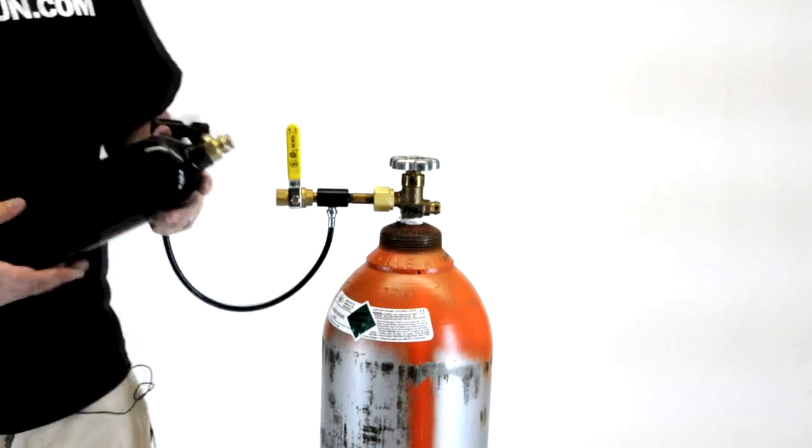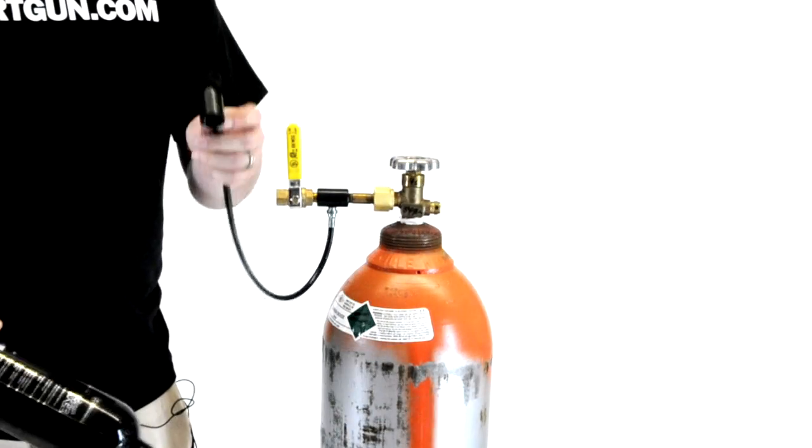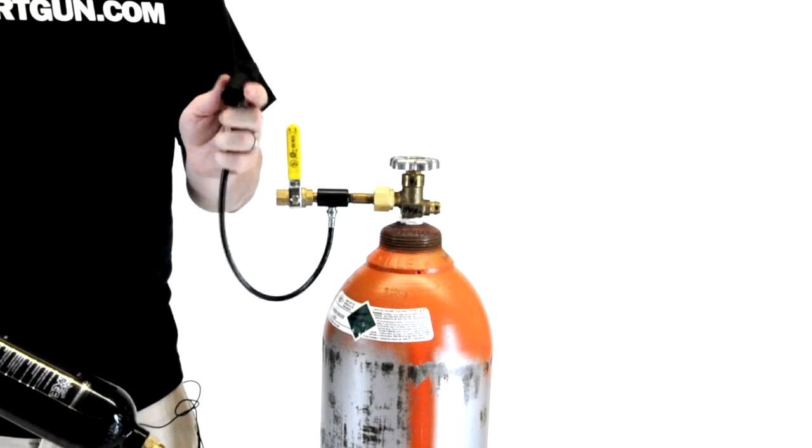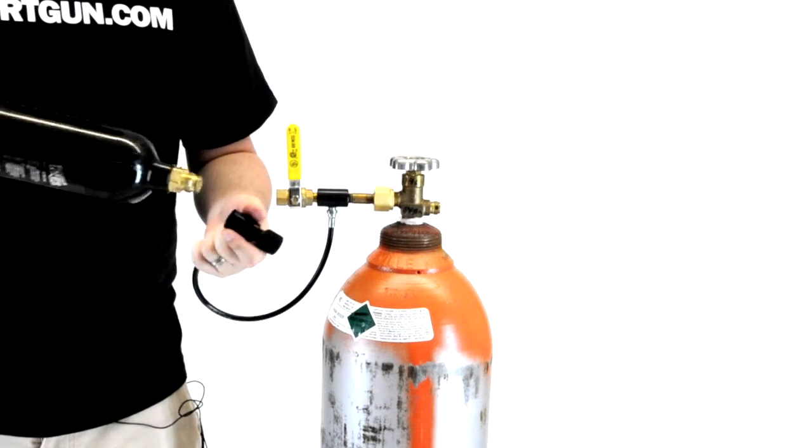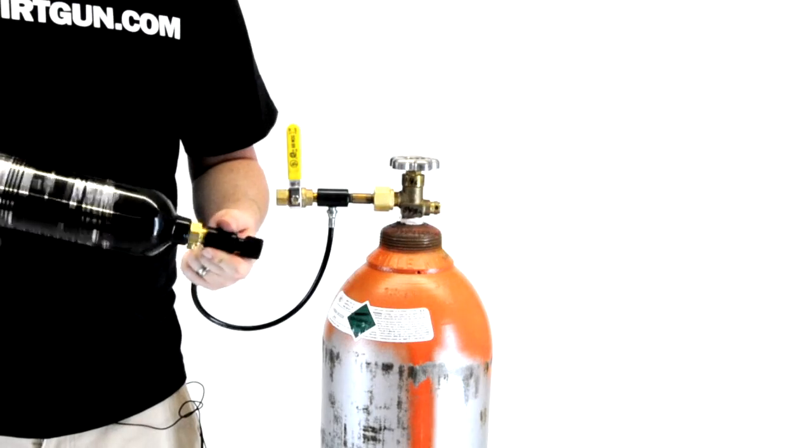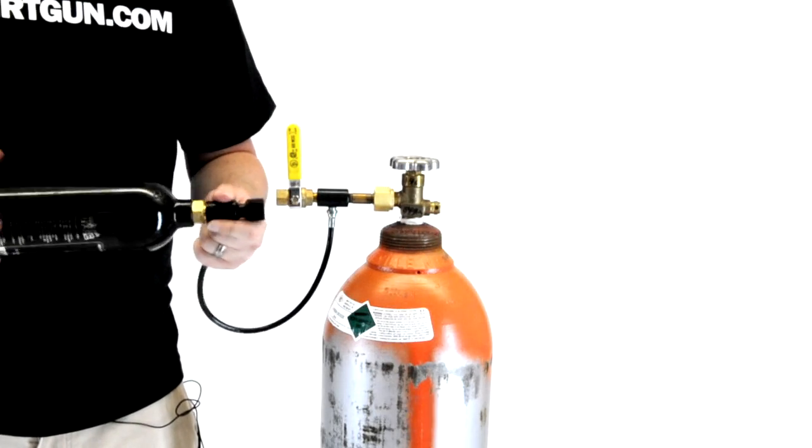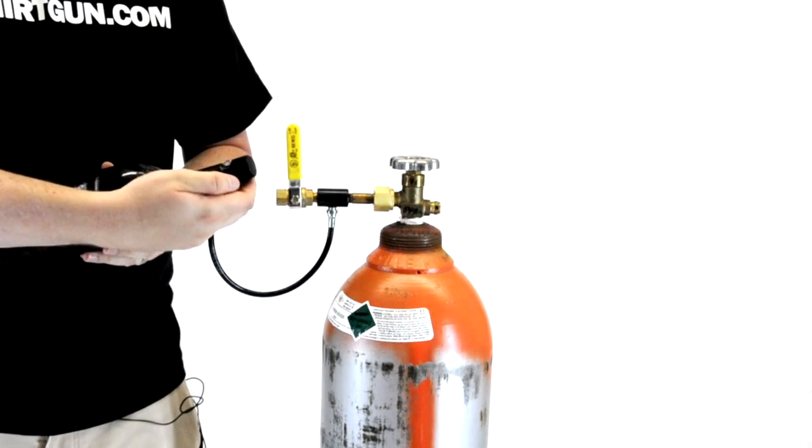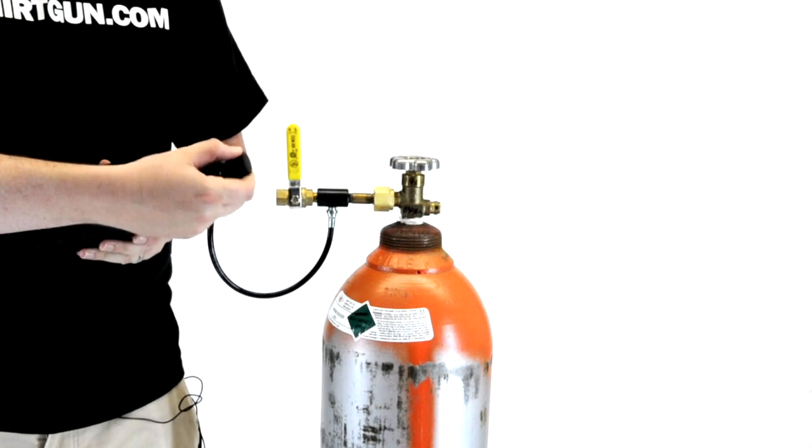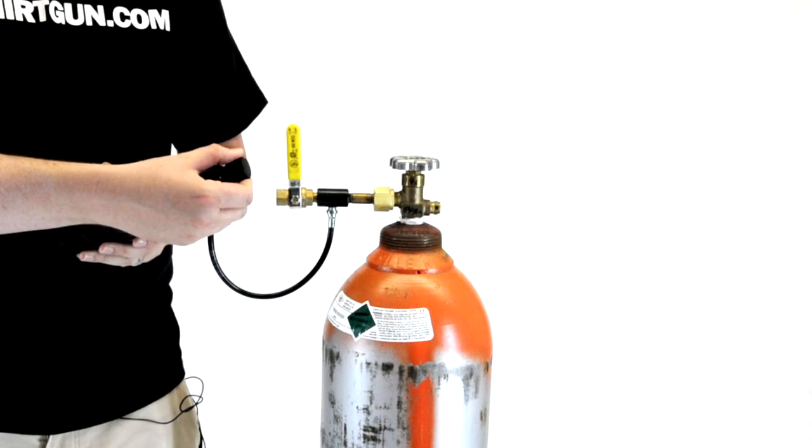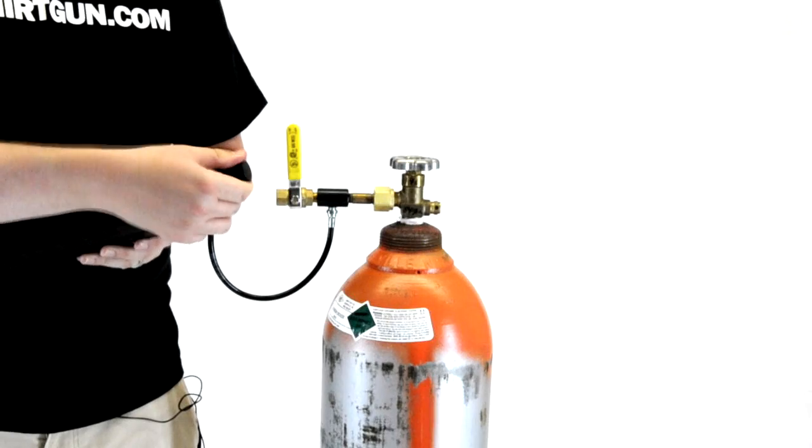For the next step we're going to be using our pin valve tank. We're going to take the universal fill adapter, the UFA, and make sure our knob is backed out on it. Then we're going to screw the end of the tank into the UFA. After it's screwed in, we're going to take the knob on the top of that and engage the pin valve. Turn it until you feel it engage, then give it about another turn.